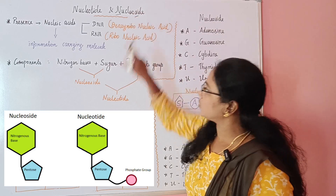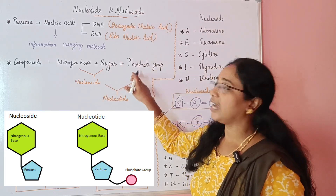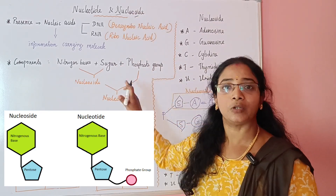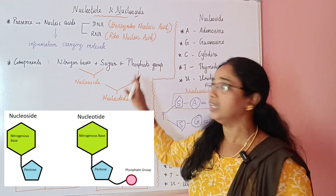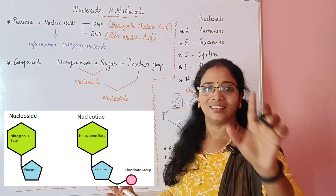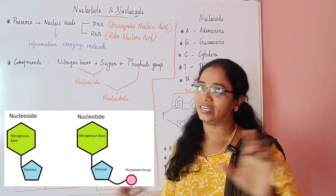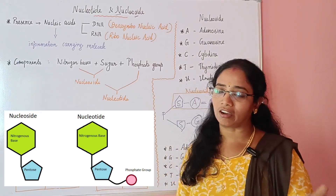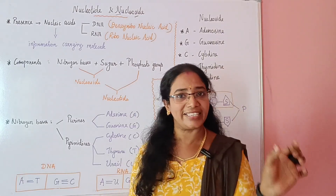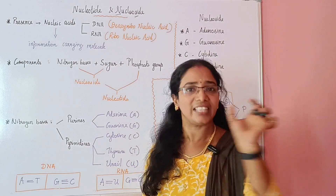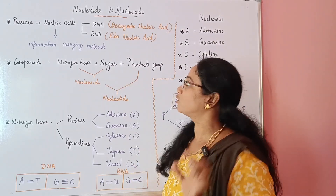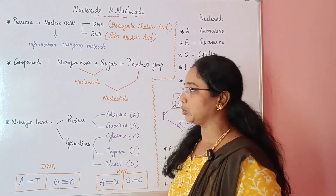In nucleoside, if you join a phosphate group, it becomes nucleotide. N for nitrogen base, S for sugar — and adding a phosphate group makes it a nucleotide.